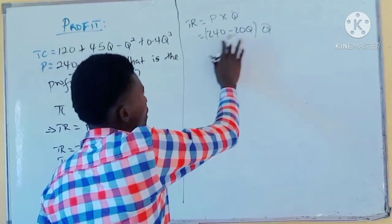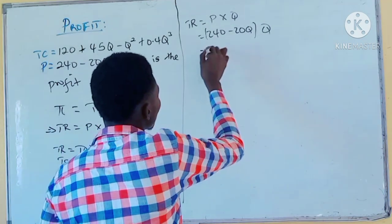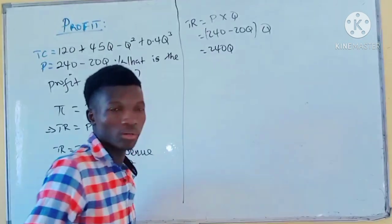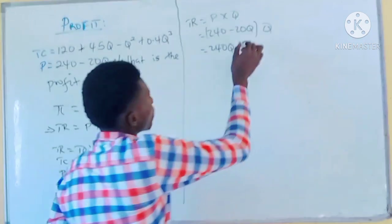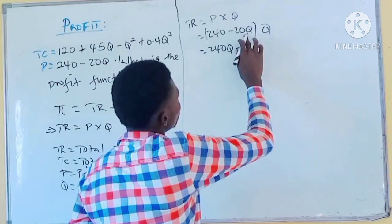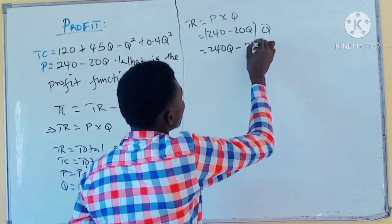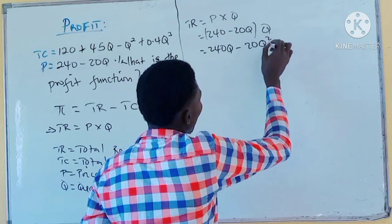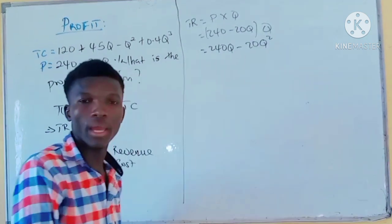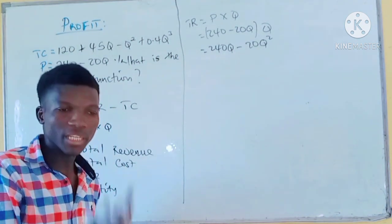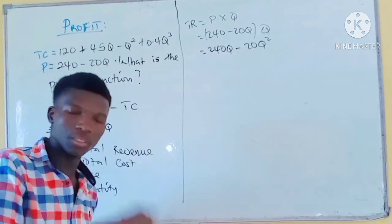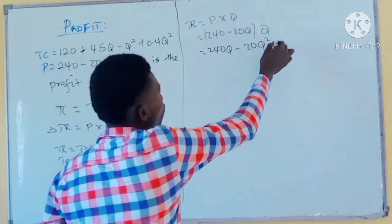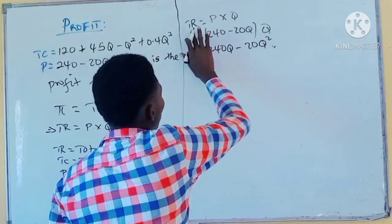Now we multiply this out: 240 times Q gives 240Q. Minus 20Q times Q gives minus 20Q squared, because Q times Q is Q squared. So total revenue equals 240Q minus 20Q squared.